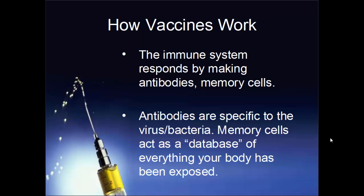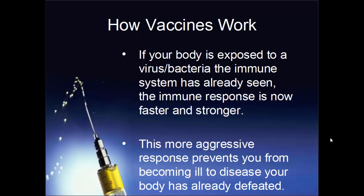The immune system is very complex, but here are a few key points. Some parts of the immune system make a substance called antibodies, and some make types of cells called memory cells. Antibodies are very specific to the virus or bacterium they're attacking. Memory cells act as a kind of database, keeping a record of everything your immune system has been exposed to throughout your life. If your body is exposed to a virus or bacterium it has already seen, the immune response will be much faster and much stronger the second time around, preventing you from getting sick.